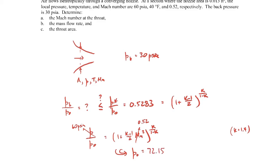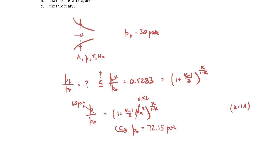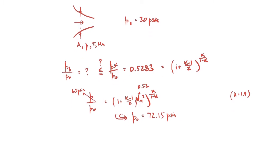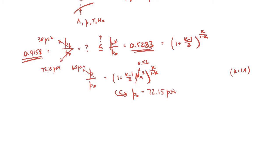Solving the stagnation pressure ratio expression gives P₀ = 72.15 psia. Since the flow is all subsonic in this converging section with no shock waves, the process is isentropic and stagnation pressure remains constant. Taking the ratio of the back pressure (30 psia) to the stagnation pressure (72.15 psia) gives 0.4158. Since 0.4158 is less than 0.5283, the flow is choked.